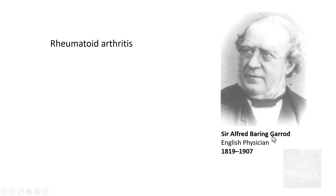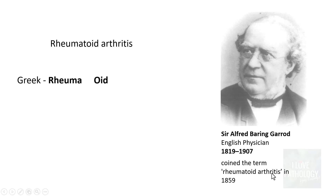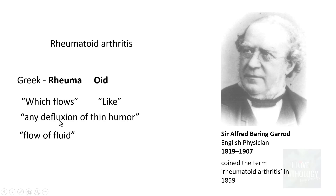The name rheumatoid arthritis was coined by Sir Alfred Baring Garrod, an English physician, back in 1859. It is based on the Greek word 'rheuma,' meaning flow of fluid, 'arthros' meaning joint, and 'itis' meaning inflammation.